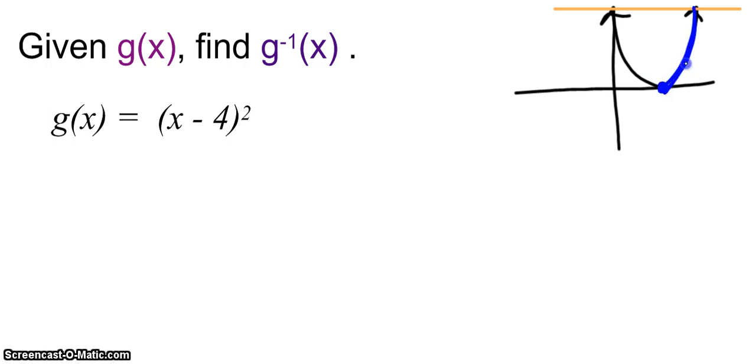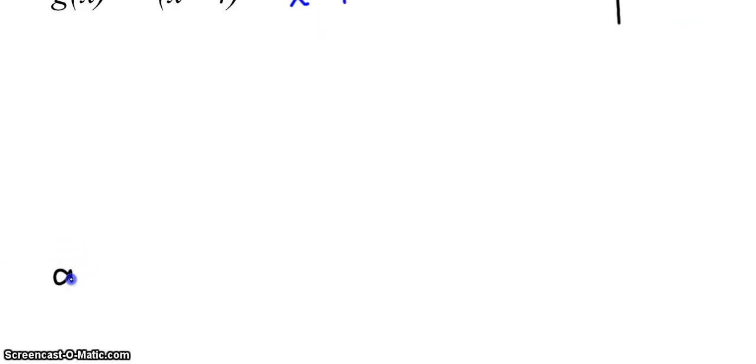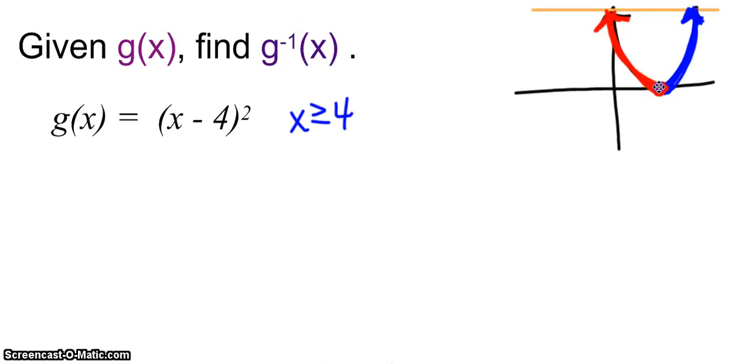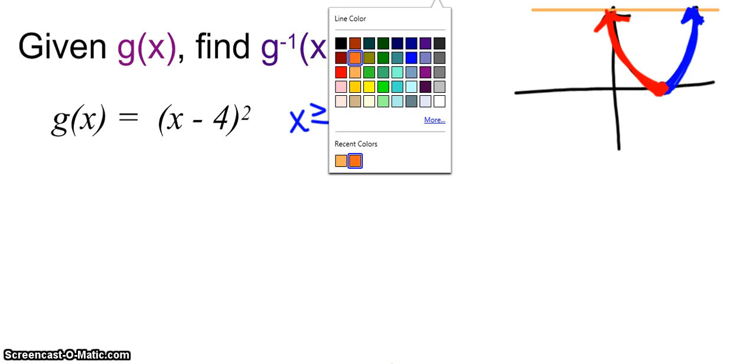I'm going to start first by looking at just this blue piece of my graph. If I look at just the blue, does that pass a horizontal line test? Yes. Which means that if I throw on the restriction that x has to be greater than or equal to 4, because this was our x value of 4, now I'm just talking about this blue piece. And the inverse will exist. My other option would be to just look at this red piece. Does the red piece pass the horizontal line test? Yes, it does. So I could keep my g(x) function, but I'm going to put the restriction that x has to be less than or equal to 4. That would be talking about this red piece right here.